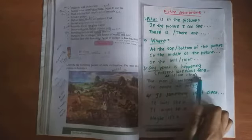Say what is happening. Here we have to use present continuous tense. We have to use present continuous tense. For example, the man is walking. In the picture, the man is walking. The people are eating. The birds are flying. Like that.